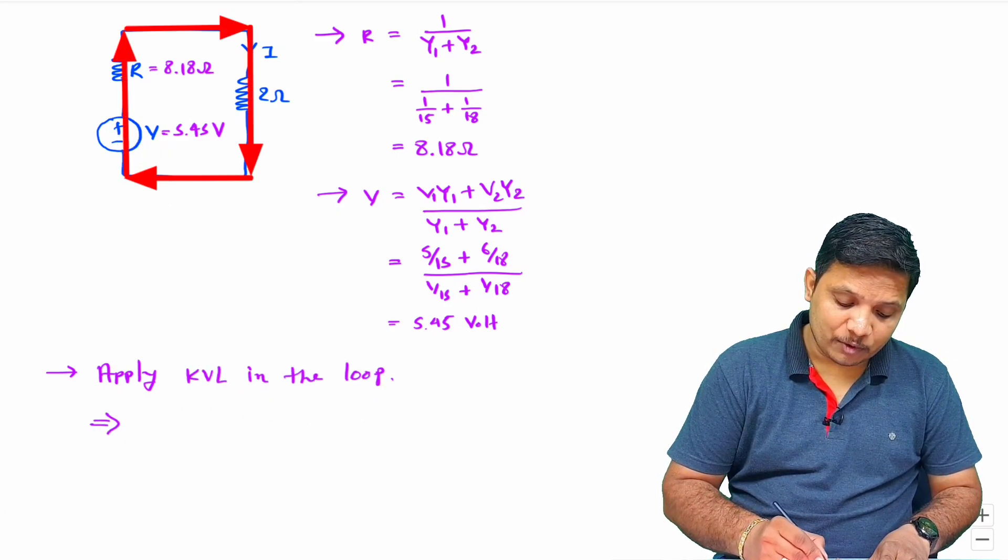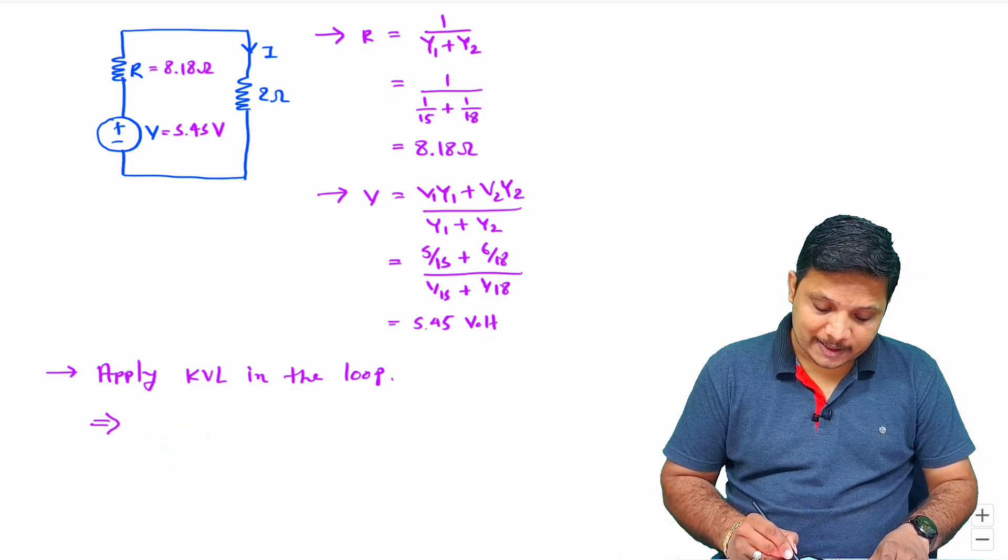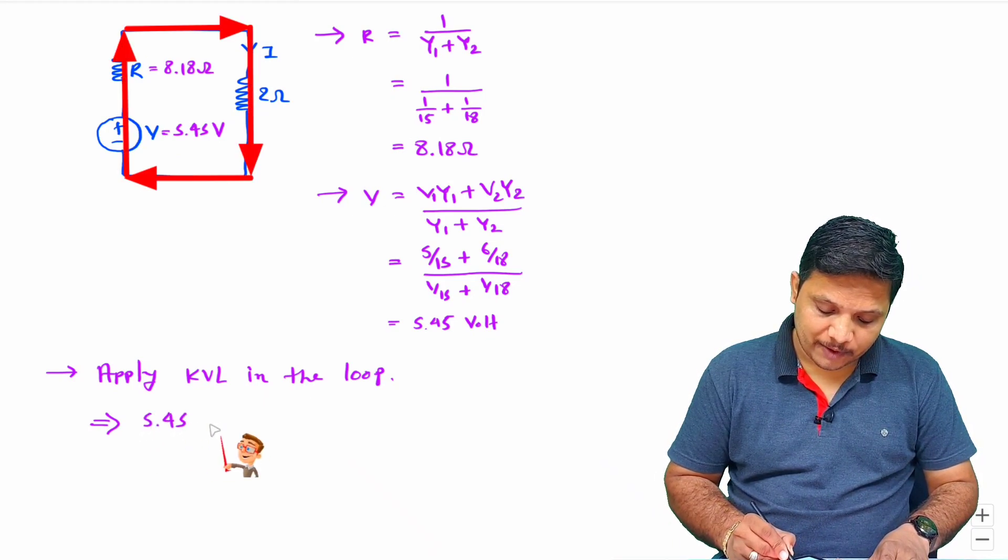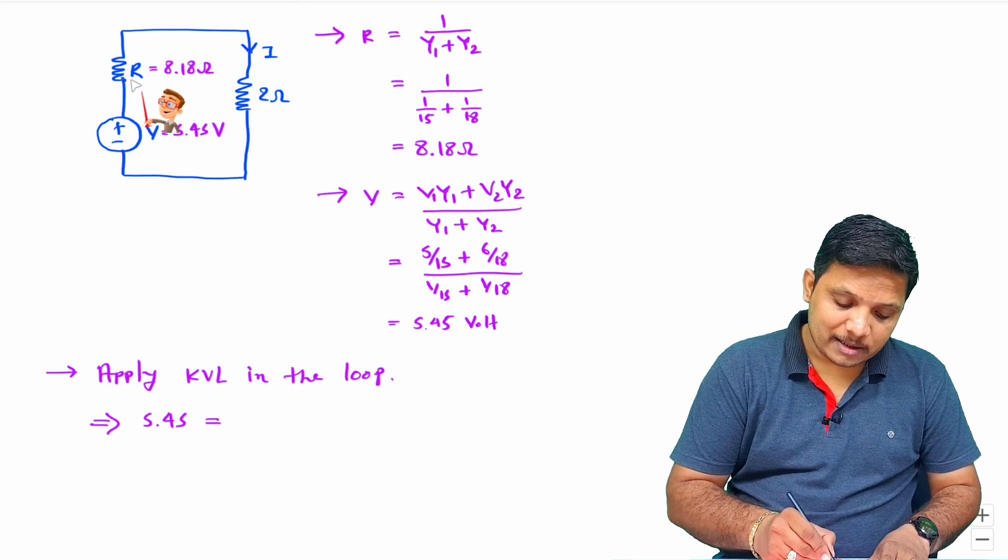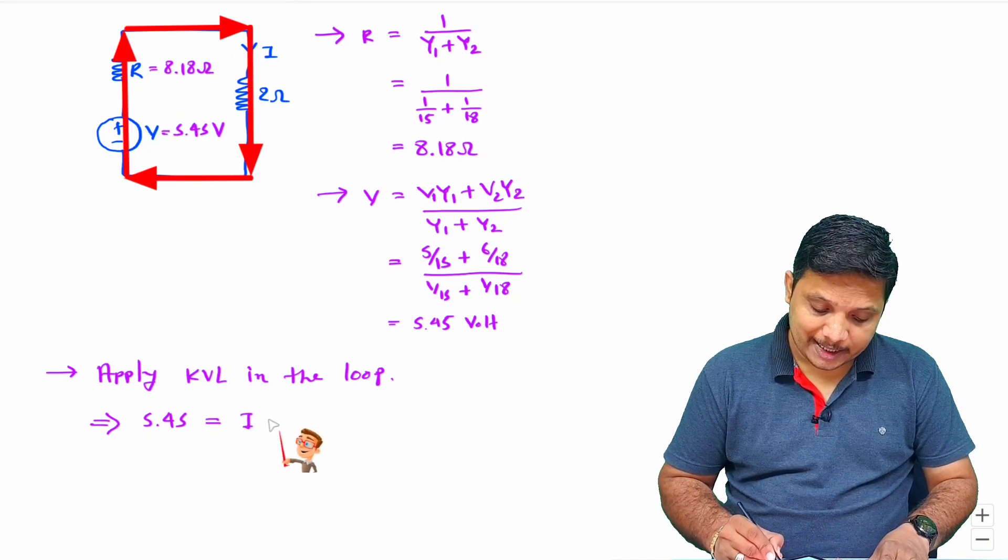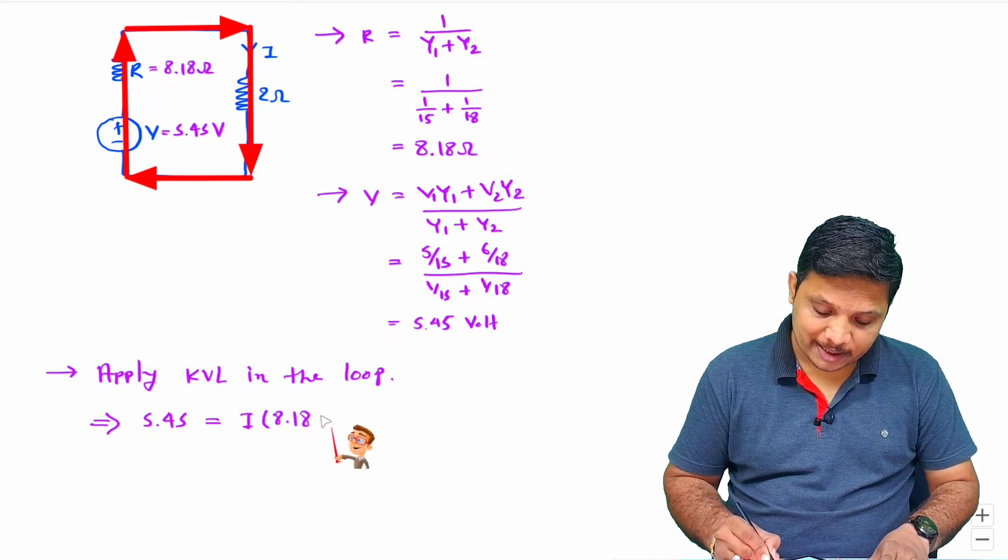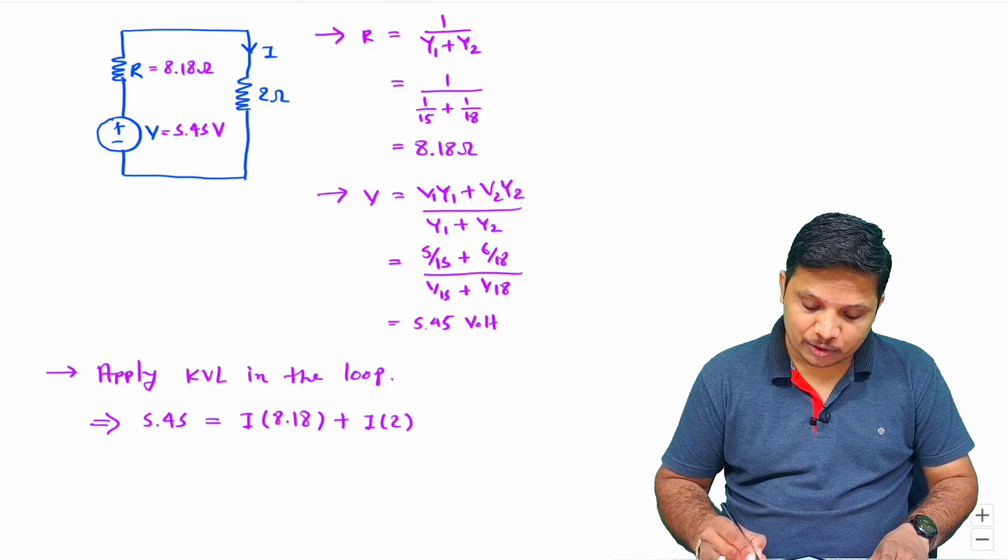Now we have only one voltage source happening from minus to plus. So I can say that is 5.45 and that equals voltage drop across each of these elements. Voltage drop across this R is I into 8.18 plus voltage drop across 2 ohm is I into 2.